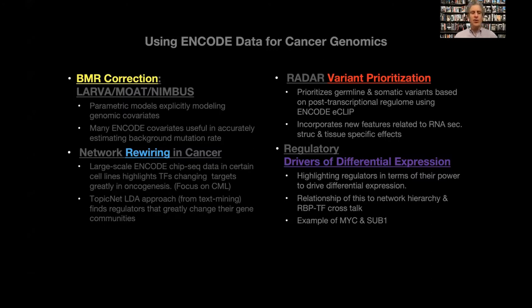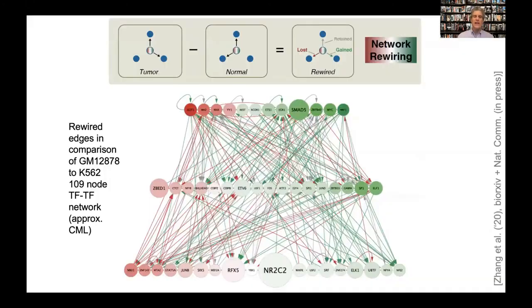The next topic is genomic rewiring in cancer. I'm going to focus on one particular transformation: from K562 to GM12878. GM12878 represents a normal blood cell; K562 represents a white blood cell tumor. For these cell lines, where we have tremendous amounts of ENCODE TF ChIP data, we can actually look at the changes in regulation and how the regulatory network rewires.